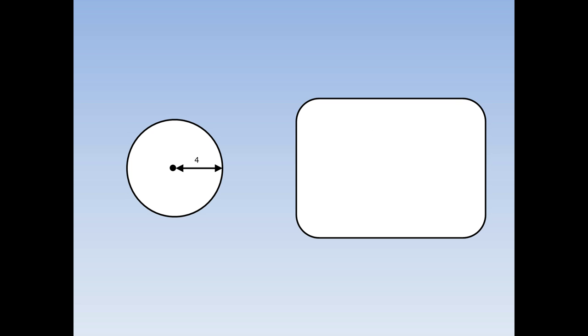Here is a circle of radius 4. To find out the area, we write out the formula: area is pi r squared.